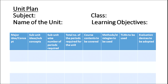We would take two periods for each type of disease, giving us eight periods altogether for the unit. Under the column of course contents to be covered, we would have the name of the disease, its symptoms, its causes, and the measures to be taken to treat the disease.